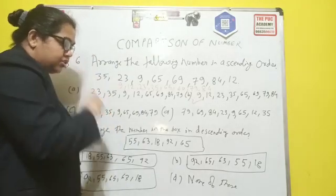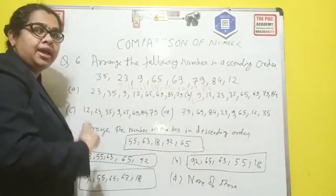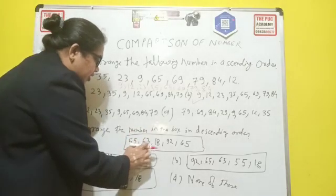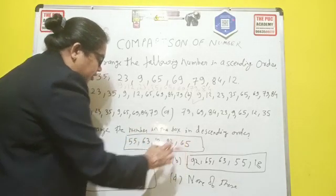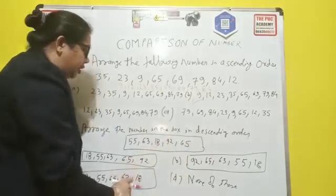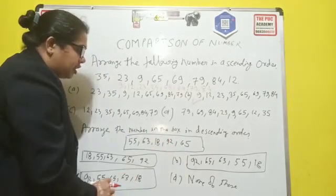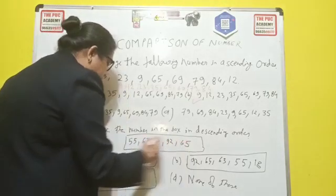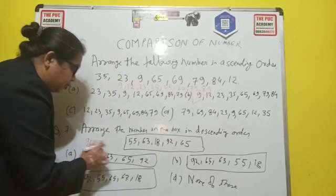And these questions came in the Olympiad exams also. So numbers are 55, 63, 18, 92, and 65. All are two-digit numbers. So you see on the 10th position which is the big number first. Number 92. So you write here your answer somewhere and try to match. So 92.